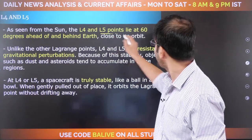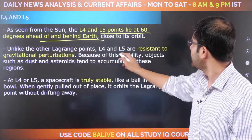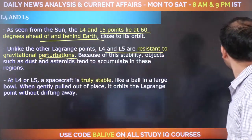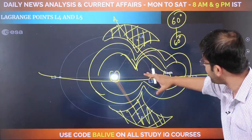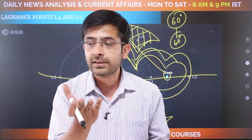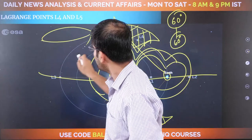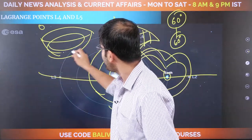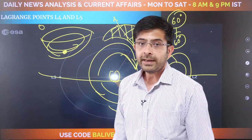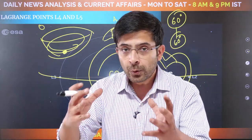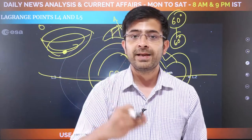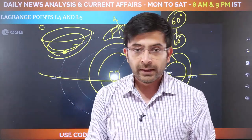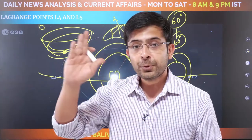L4 and L5 lie at 60 degrees ahead and behind the earth and are resistant to gravitational perturbations. India is putting Aditya L1 at the L1 Lagrange point, between the earth and the sun, to study the sun from a little closer. Coronal mass ejections, solar flares — the sun is the center of our solar system, so it makes sense to understand it. Everything is co-dependent on the sun. Has any other country done it? Yes — the SOHO mission, a joint operation of the European Space Agency and NASA, is already operating at the L1 position.